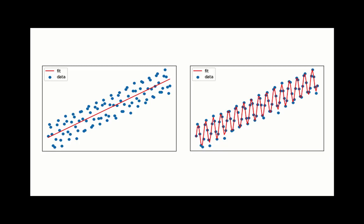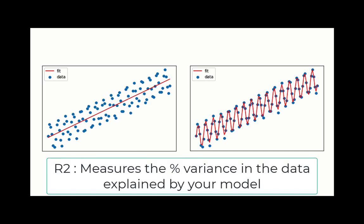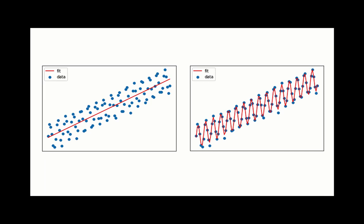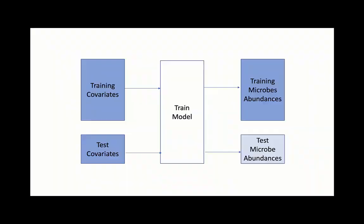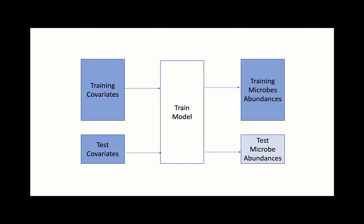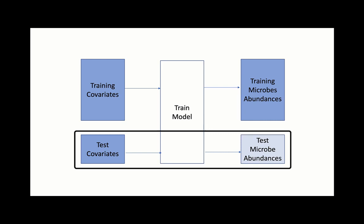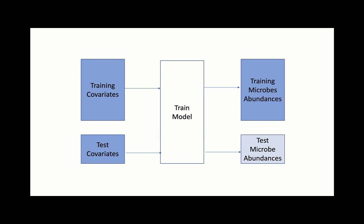With these models at hand, we need to have a way to evaluate how good the model is. A common metric with linear regression is R squared, which measures the variance in the data explained by your model. There is a real danger of overfitting, where you are merely memorizing the microbial abundances instead of learning something biologically useful. We can try to get a handle on overfitting through a technique called cross-validation: first fit the model using a portion of the dataset, then predict the microbial abundances for the remainder of the dataset.